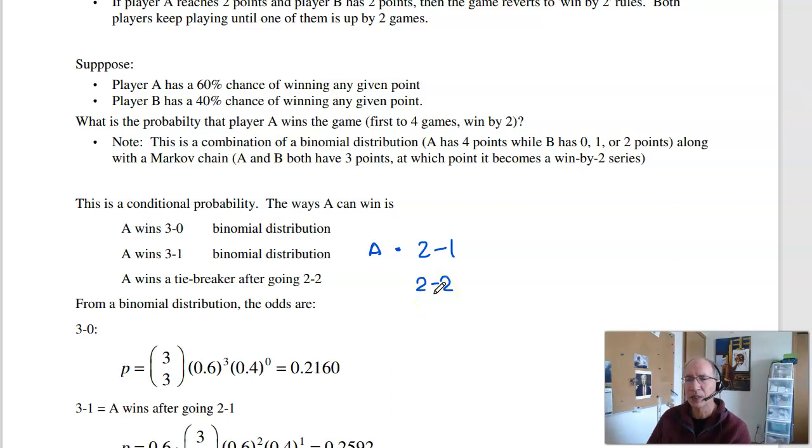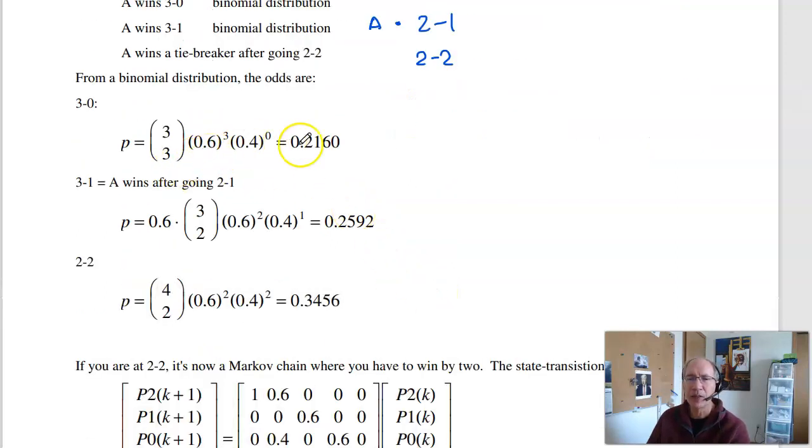The probability of A going 3-0 is a binomial distribution. I've got three coin tosses, I get three heads. Odds of a heads, or a win, are 0.6. Odds of a loss are 0.4. Multiply it all out, 20% chance A is going to go 3-0. A can also win after going 2-1. So three games, pick two for heads. I've got two heads, one tail. And A has to win the next game. Gives you 0.2592. Third way to win, I go to deuce, 2-2. So play four games, pick two, I get two heads. 0.6 squared, 0.4 squared. 34% chance you go to deuce.